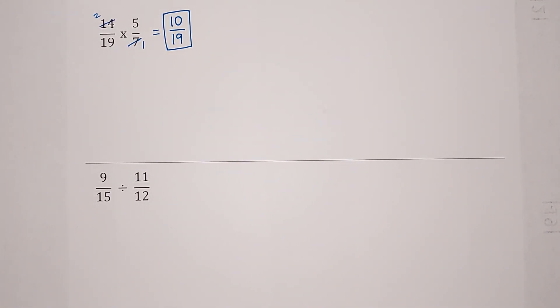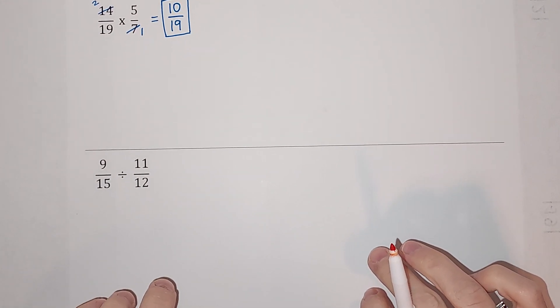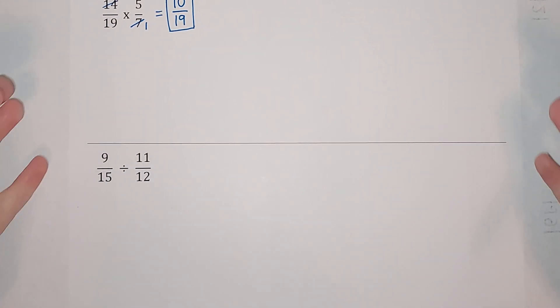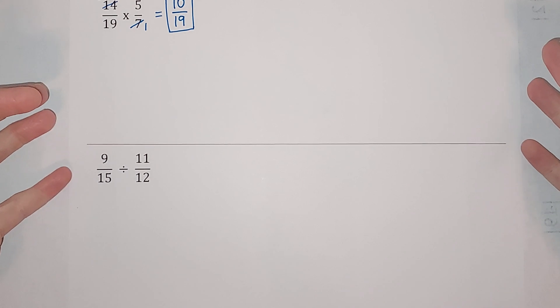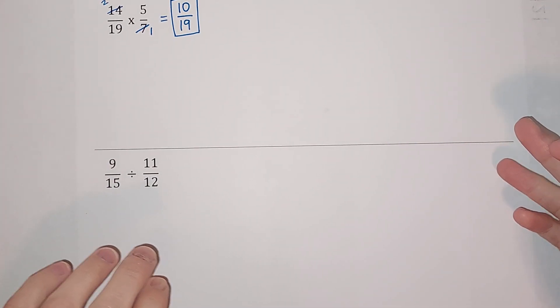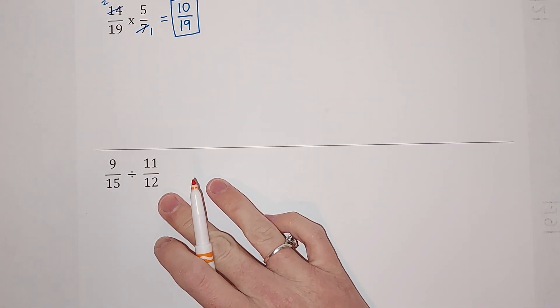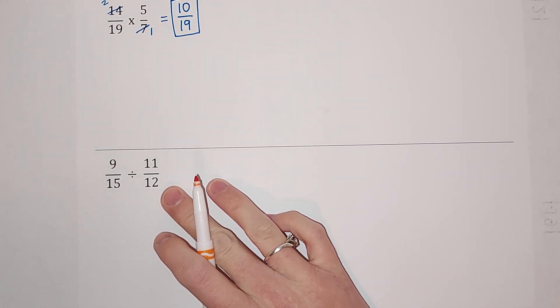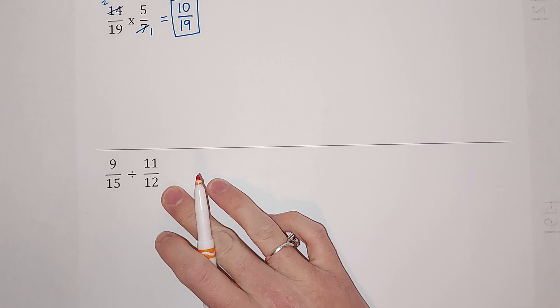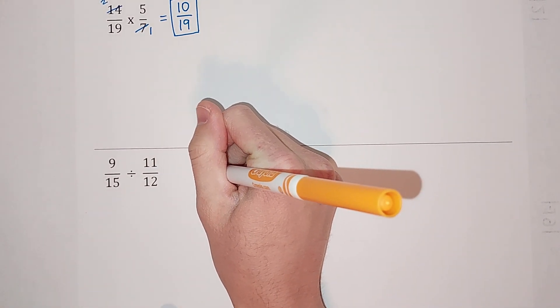Next one. We're doing almost the exact same thing. When we divide fractions, all we do is flip the second one, reciprocal if you like that word. We flip this one and we multiply.